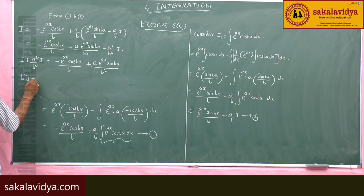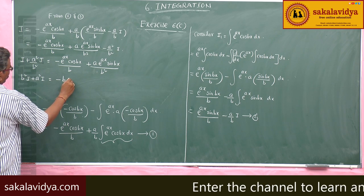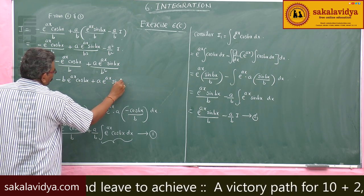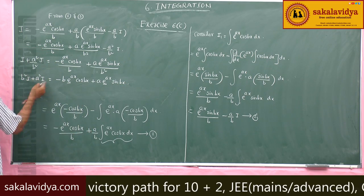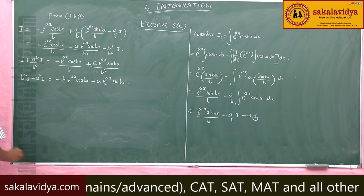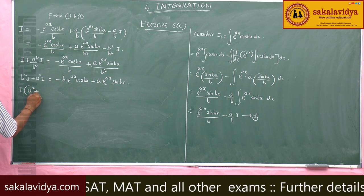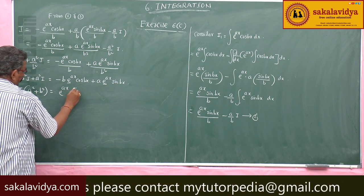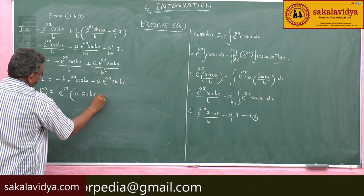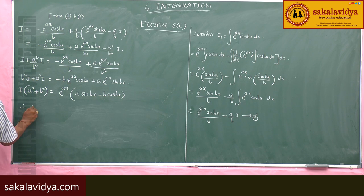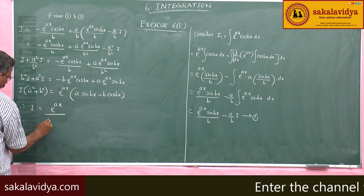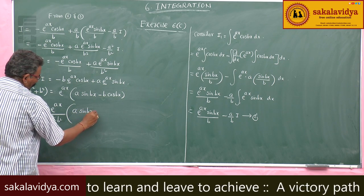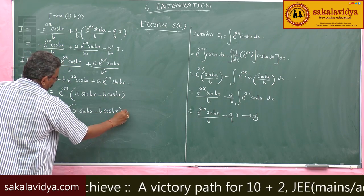So, b squared I plus a squared I equals minus b e power ax cos bx plus a e power ax sin bx. Taking I common on the left: I times a squared plus b squared. On the right, taking e power ax common: e power ax times a sin bx minus b cos bx. Therefore, I equals e power ax by a squared plus b squared, times a sin bx minus b cos bx, plus constant of integration.